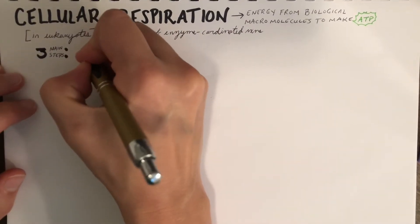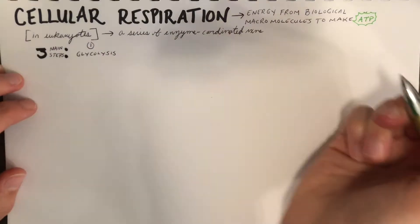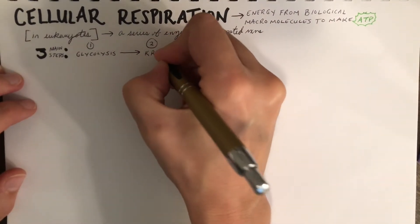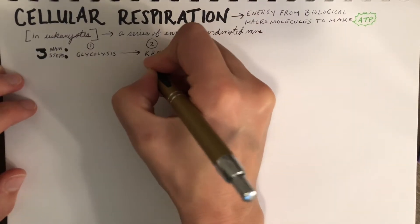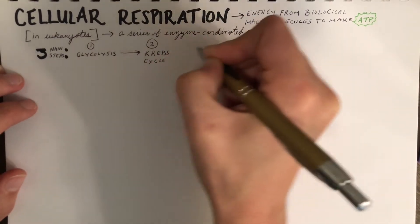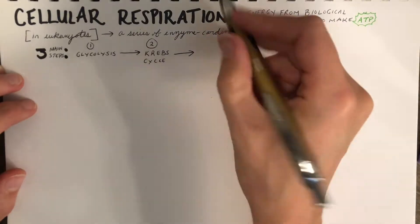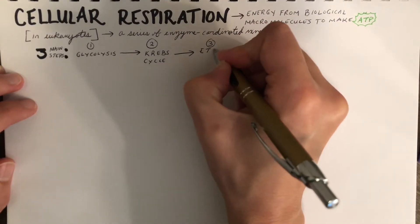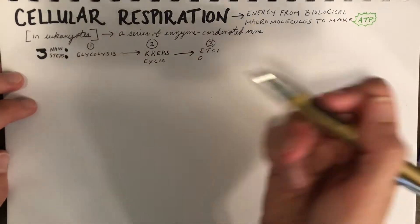The first is glycolysis. The second is the Krebs cycle, also known as the citric acid cycle. And the third is the electron transport chain, that also goes along with oxidative phosphorylation.